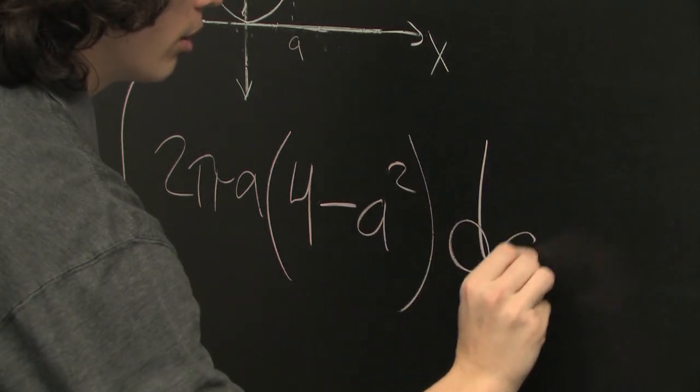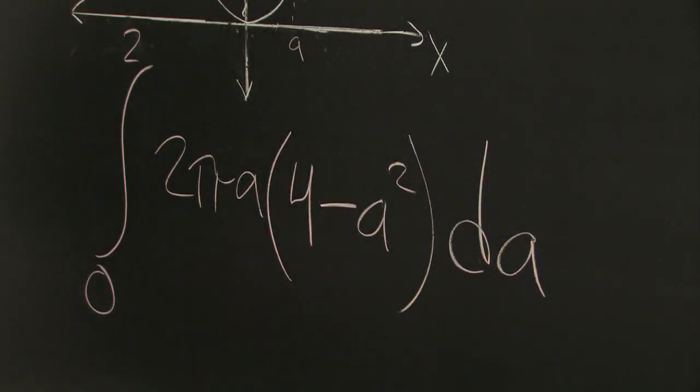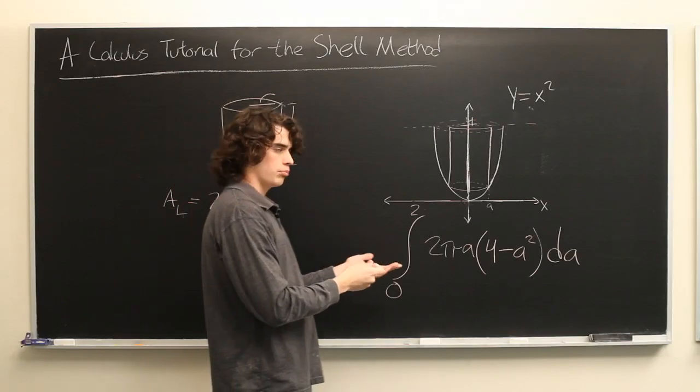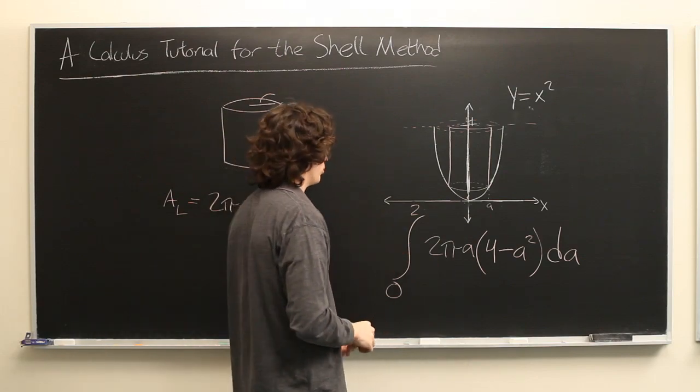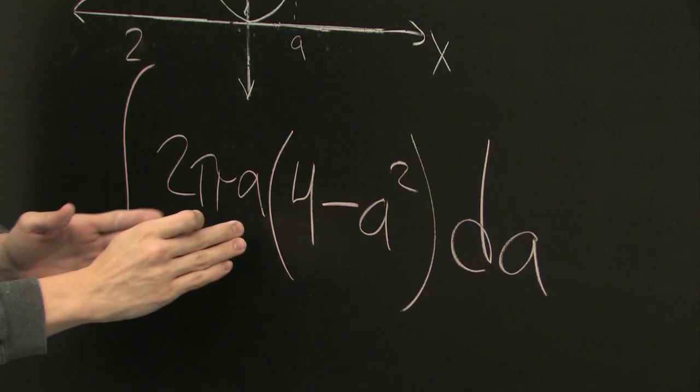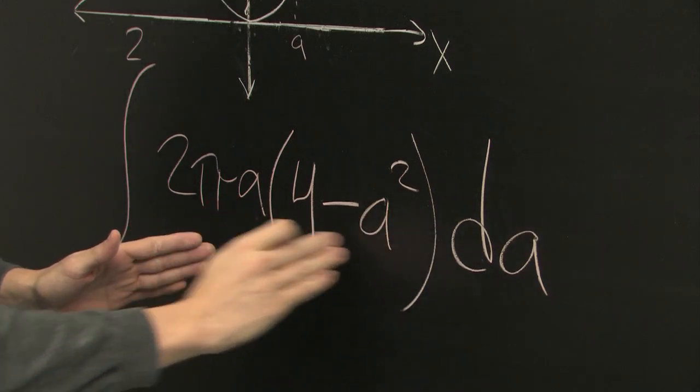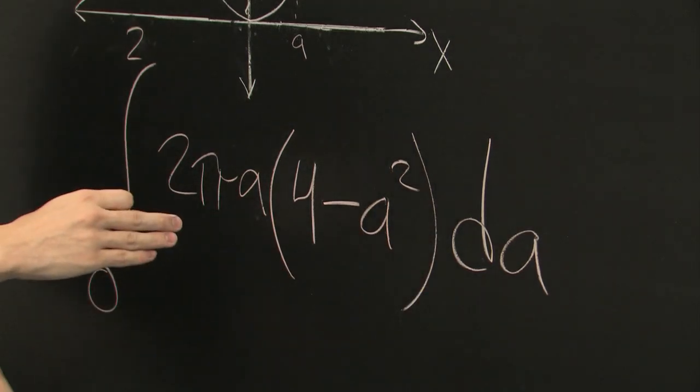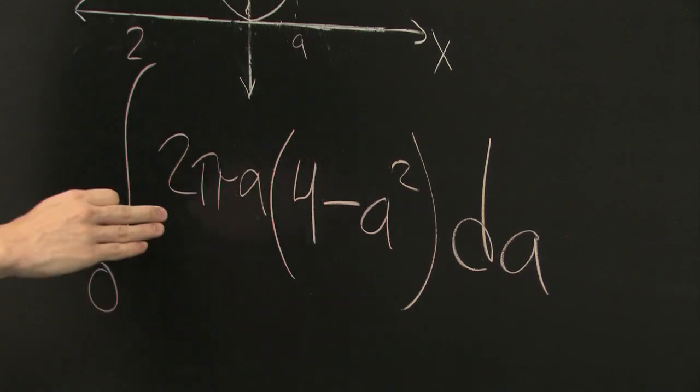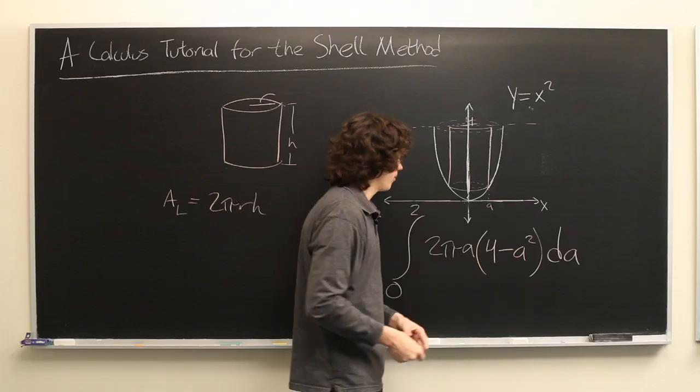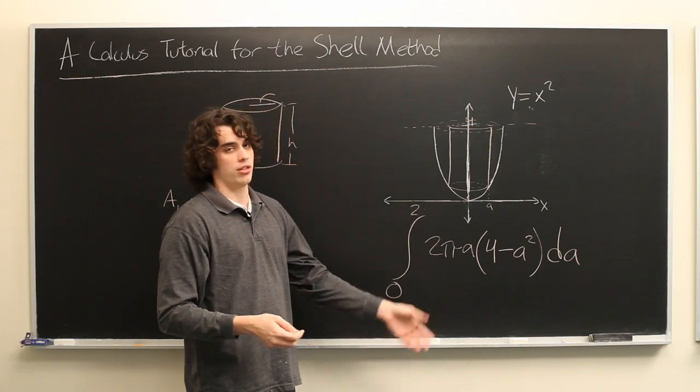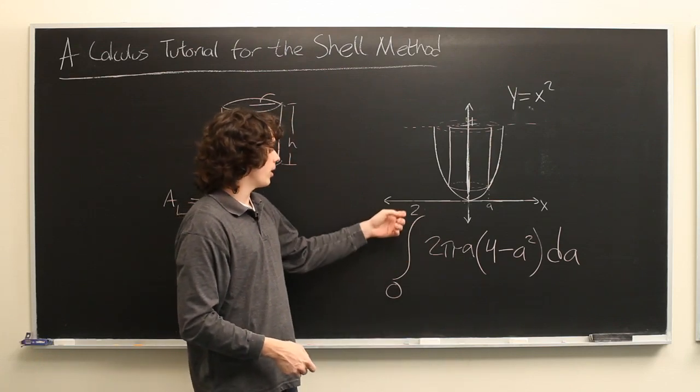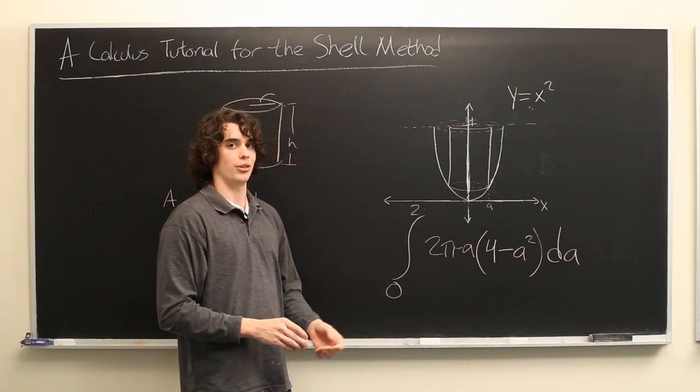We'll integrate with respect to a. This is a fairly simple integral to do. All you need to do is distribute this a to both terms inside, and you'll get 2π(4a) minus 2π(a³). Then we'll find the antiderivative of that, evaluate at 2 and 0, and you're good to go.